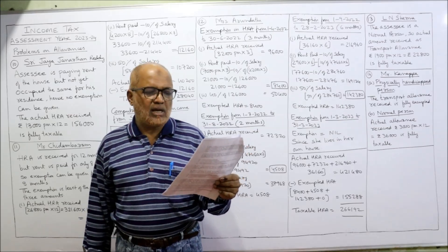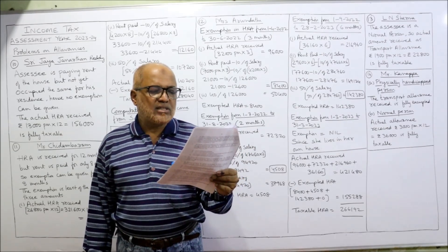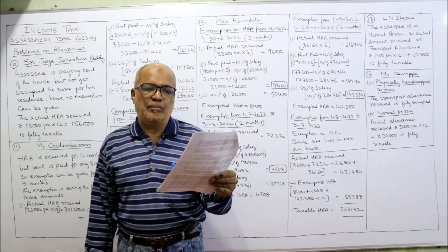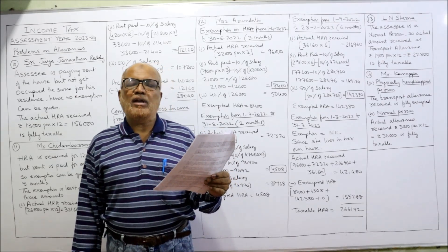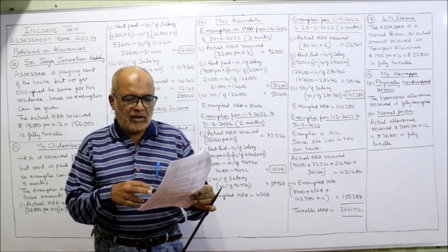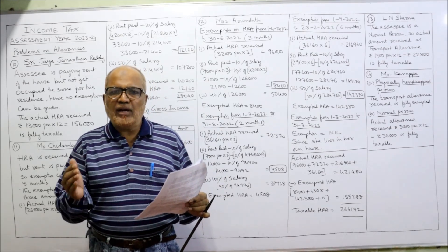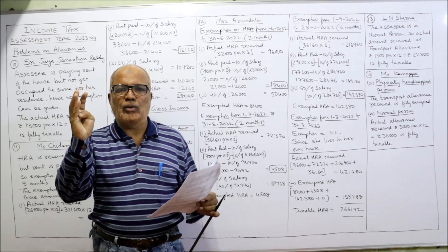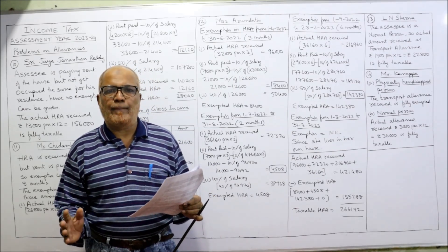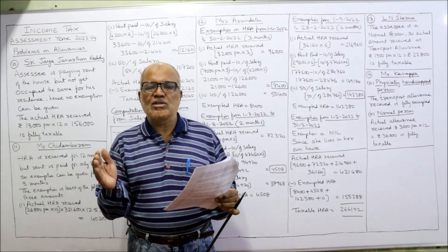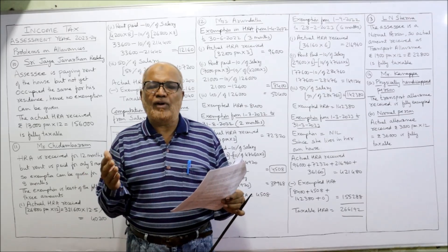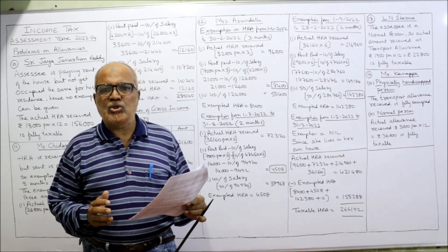On 1st July 2022, she got an increment of 13% in basic and all allowances. Our year begins from 1st April 2022. She got an increment on 1st July 2022. So we compute April, May, June — first three months — to find out how much is the exempted HRA. Then from 1st July onwards her basic and allowances have changed, so we have to find out the new exemption. On 1st September 2022 she had been transferred to Mumbai city.